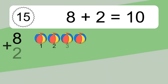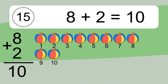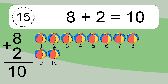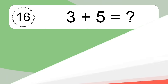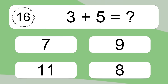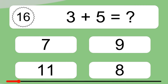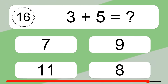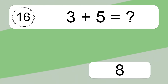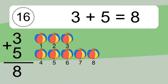8 plus 2 equals what? 8 plus 2 equals 10. 1, 2, 3, 4, 5, 6, 7, 8, 9, 10. Let's count it. 1, 2, 3, 4, 5, 6, 7, 8, 9, 10.